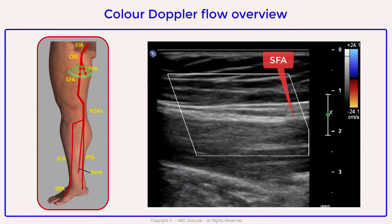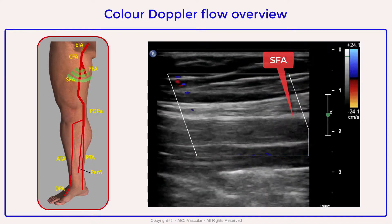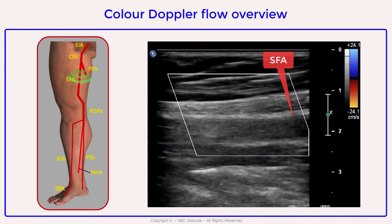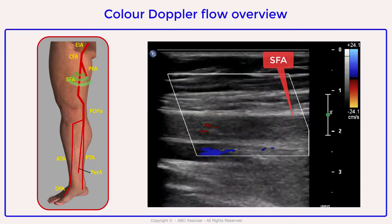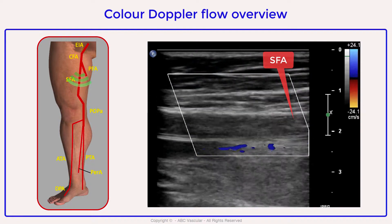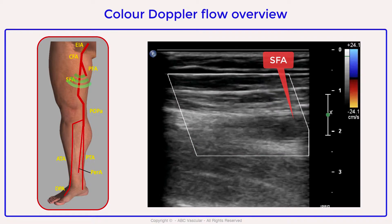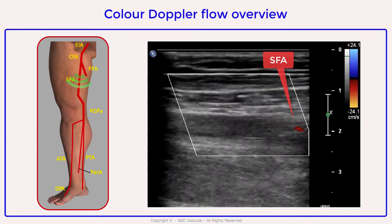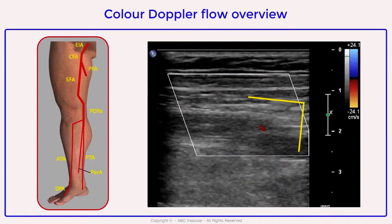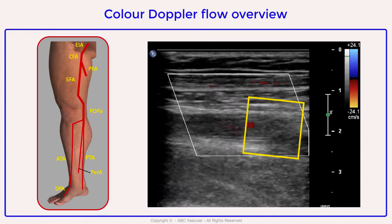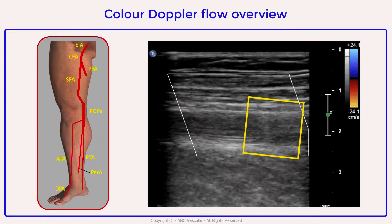As we move the transducer down towards the mid segment of the superficial femoral artery, we can see that there is reduced color filling. This is due to the presence of the segmental occlusion at the level of the mid thigh. The occlusion appears as an absence of color Doppler flow filling the lumen of the arterial segment.